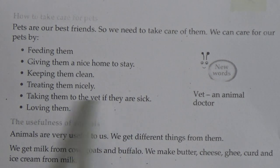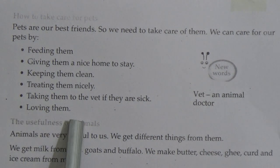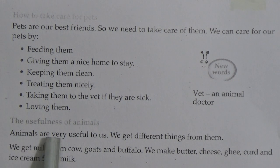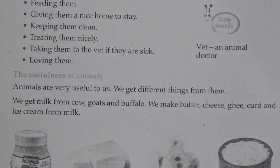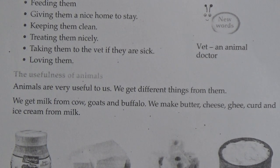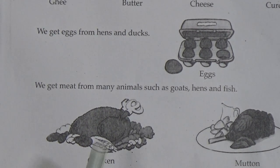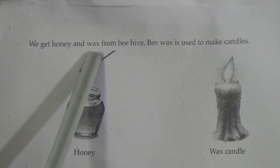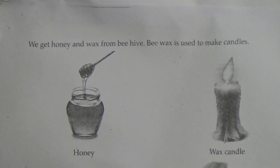We care for pets by treating them nicely, taking them to the vet if they are sick — vet means animal doctor — and loving them. Now, the usefulness of animals: animals are very useful to us, we get different things from them. We get milk from cows, goats, and buffalo. We make butter, cheese, ghee, curd, and ice cream from milk. We get eggs from hens and ducks, and we get meat from many animals such as goat, hens, and fish. We also get honey and wax from beehives. Beeswax is used to make candles.